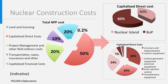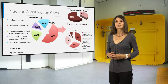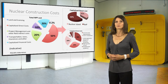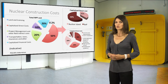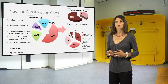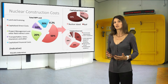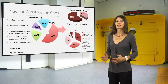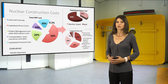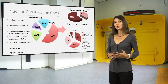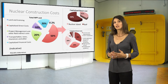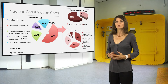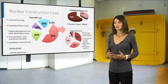The Generation IV International Forum has defined a comprehensive code of account of total capital investment costs — that is a cost breakdown system. According to this code, half of the total construction costs are capitalized direct costs, that include equipment, on-site direct labor, and commodities such as wire and concrete. Main components of direct costs are civil and reactor equipment, including the steam generator and turbine equipment.